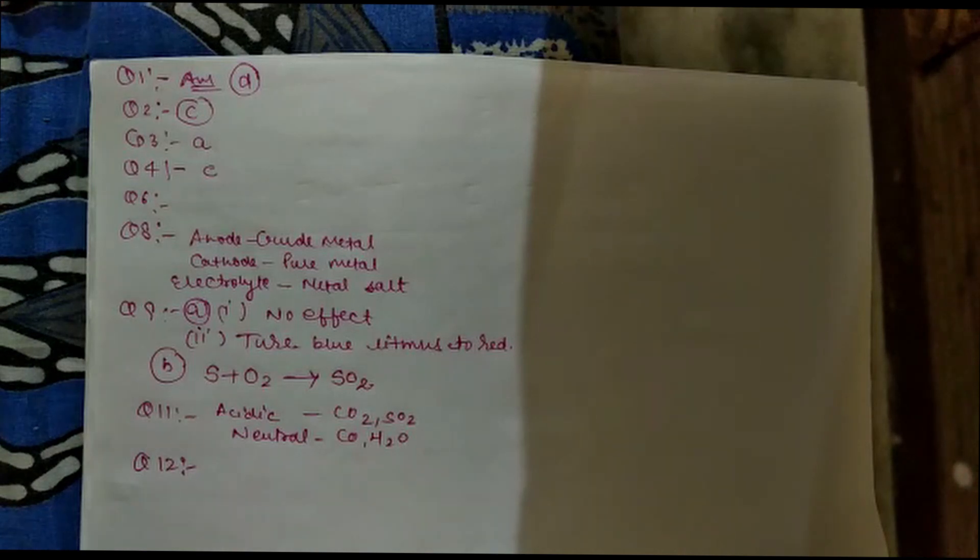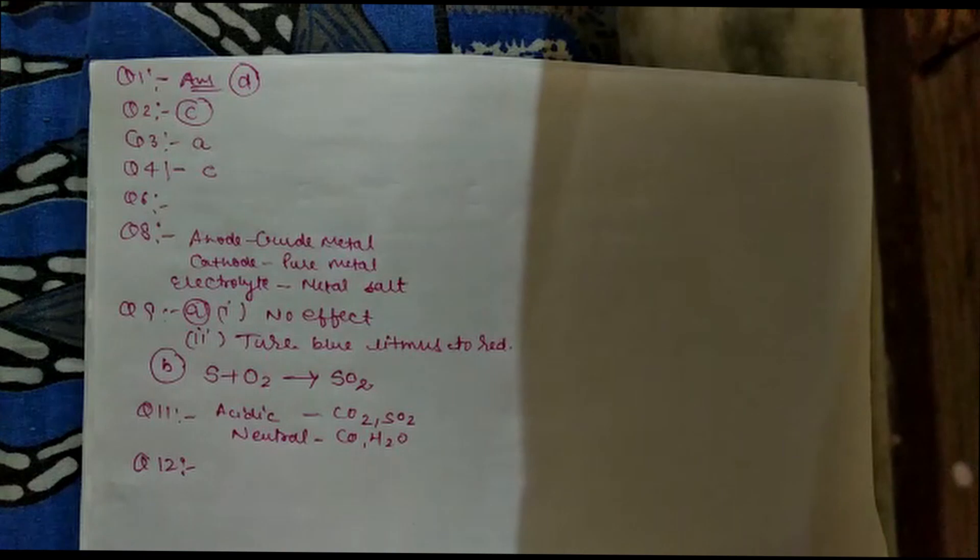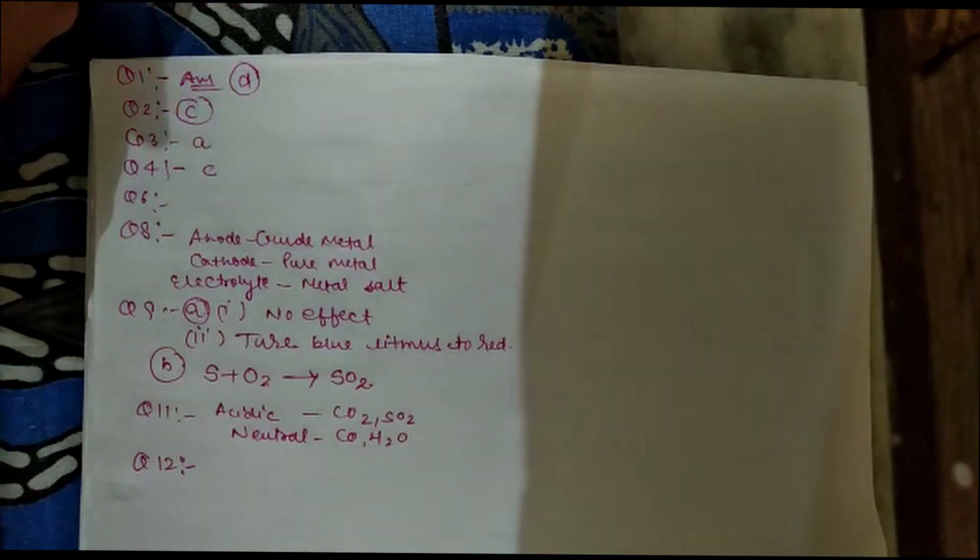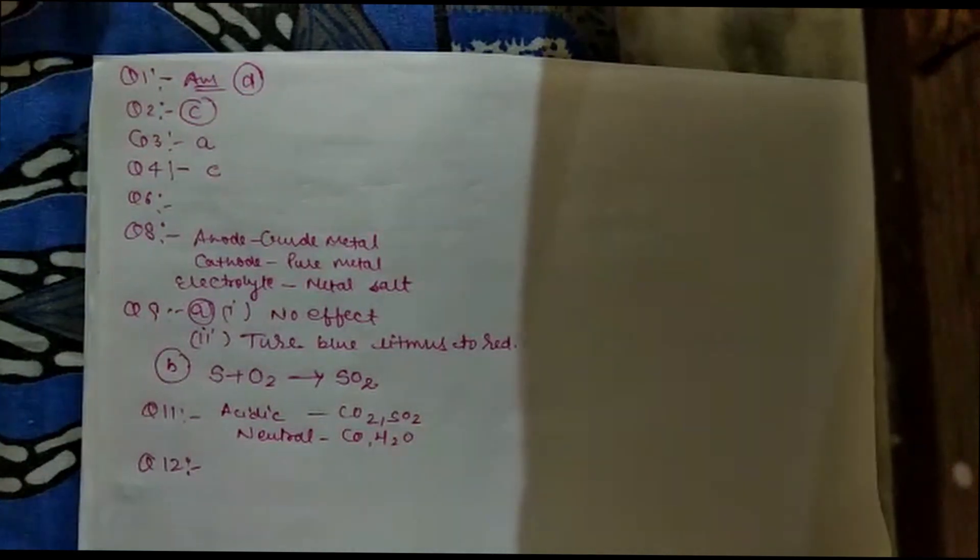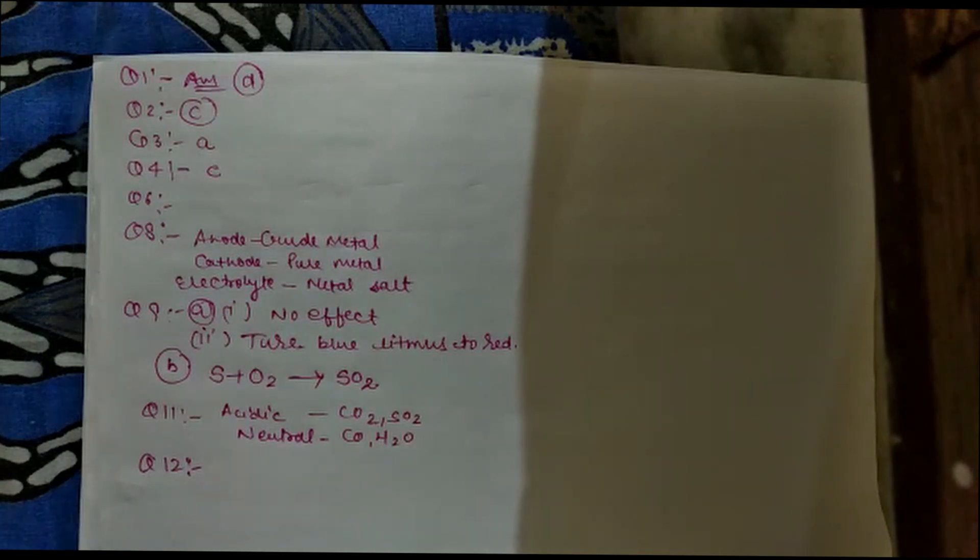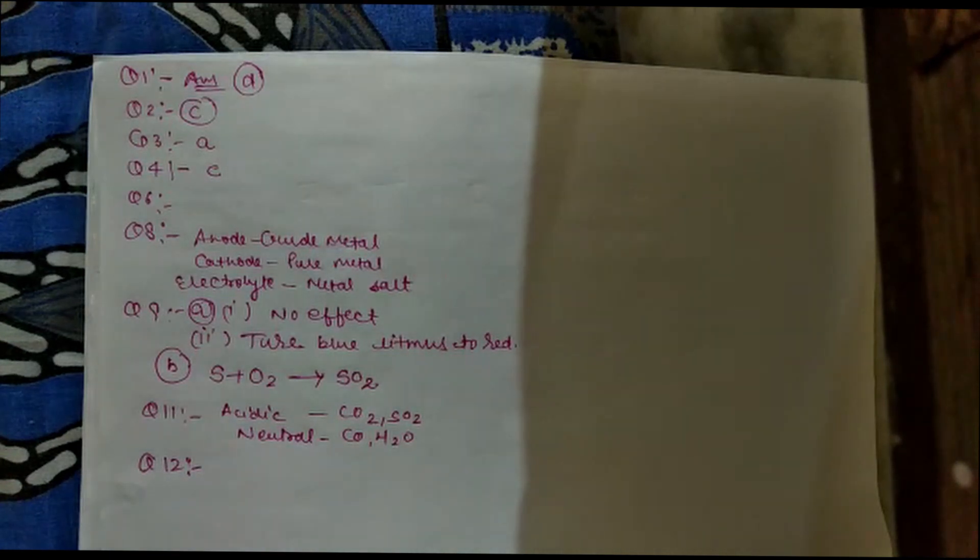Part D: carbonate and sulfide ores are usually converted into oxides during the process of extraction. What is the reason? We already discussed this. It is easier to reduce metal oxide by reduction than metal sulfide and carbonate. The reduction process can easily be used for oxides as compared to sulfide and carbonate. That's why we convert them into oxides and then extract.